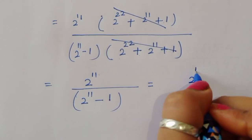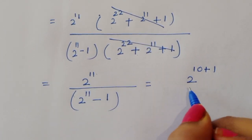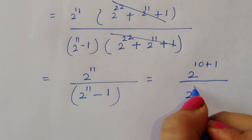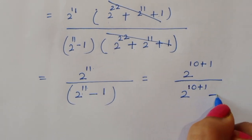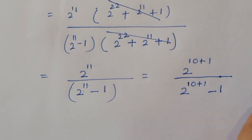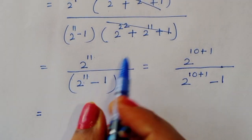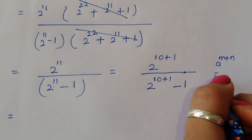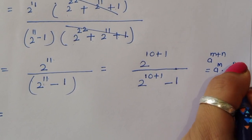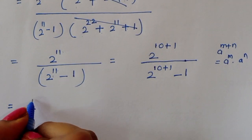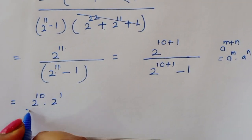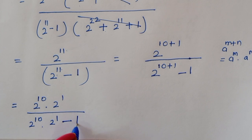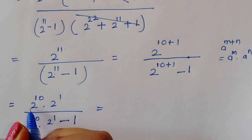We can write 2 power 11 as 2 power (10 + 1), and using the formula a power (m + n) = a power m times a power n, this becomes 2 power 10 times 2 power 1. So we have 2 power 10 times 2 divided by (2 power 10 times 2 minus 1).